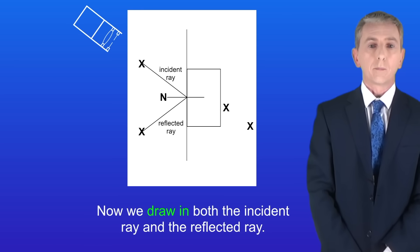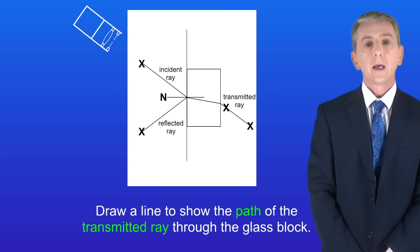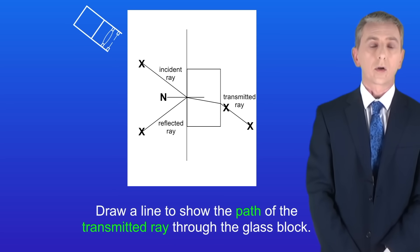Now we draw in both the incident ray and the reflected ray. Next we draw in the transmitted ray so it meets the position of the block. And lastly we draw a line to show the path of the transmitted ray through the glass block.